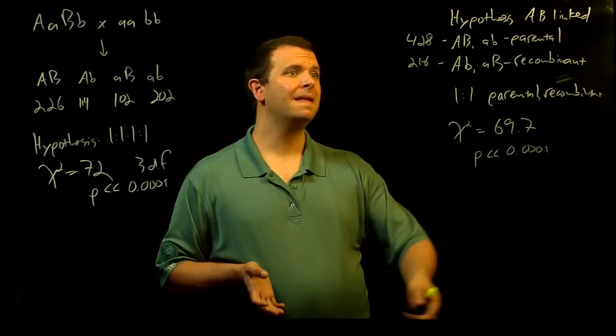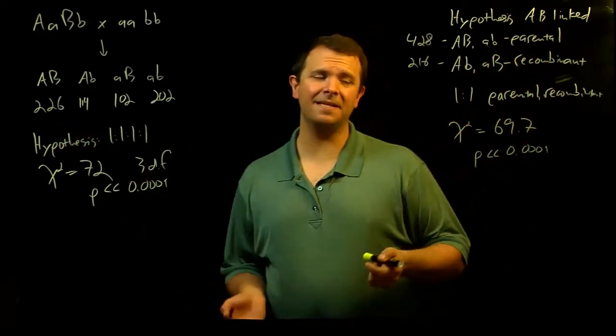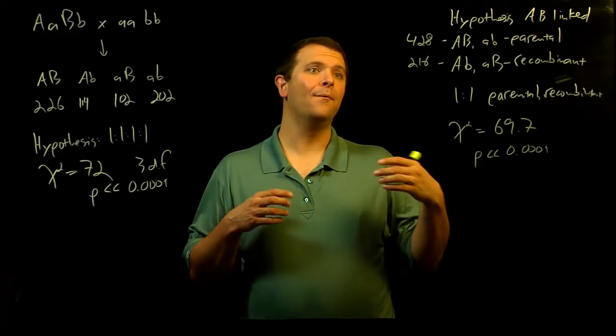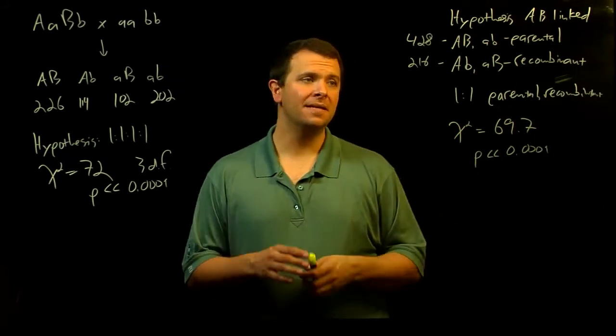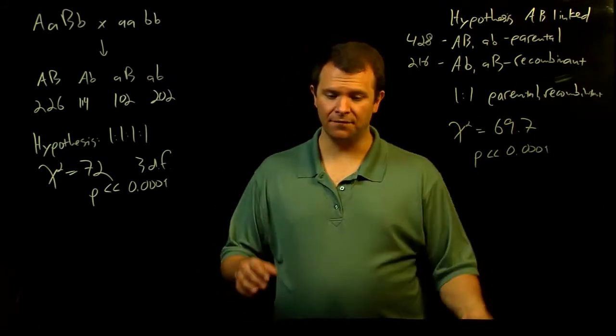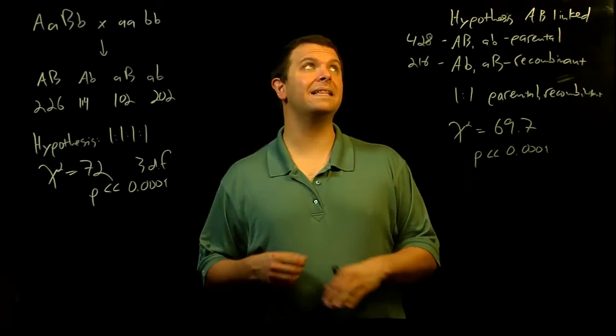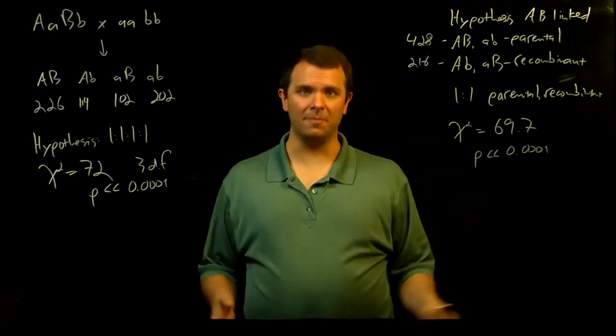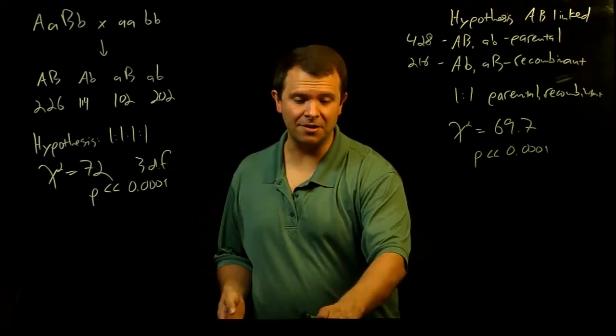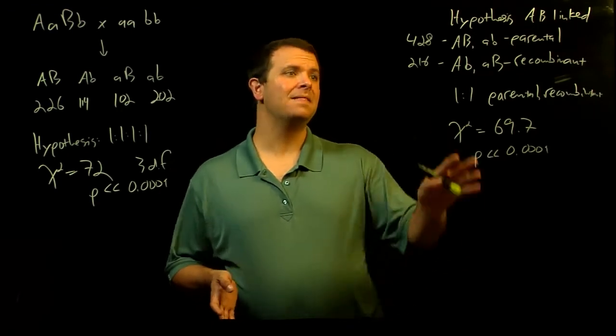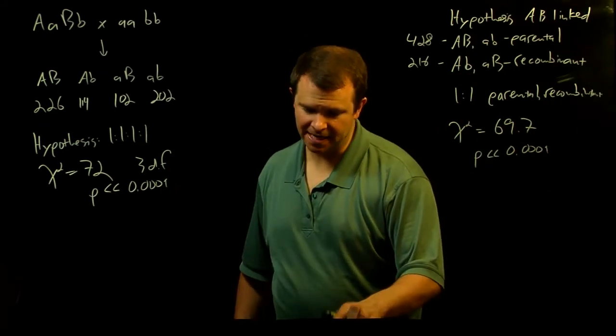And so again, this way of looking at it by separating our gametes into parental types and recombinant types, and then asking, well do they have a one-to-one ratio, this can be another test of this hypothesis that they're unlinked versus the alternate that they might be linked. And I will also note that it could also be that there is some epistasis happening or some other kind of gene-to-gene interactions that are throwing this off. But this is one possible way that linked genes might show up in this kind of data.